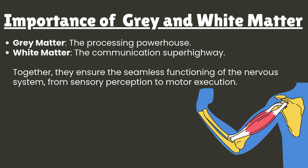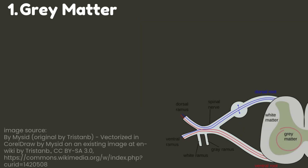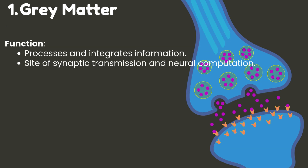Number one: gray matter structure. It is composed of neuronal cell bodies, dendrites, unmyelinated axons, glial cells, and capillaries. It appears gray due to the lack of myelin and the presence of Nissl substance. Function: it processes and integrates information. It is the site of synaptic transmission and neural computation.